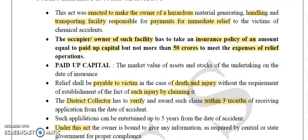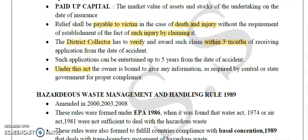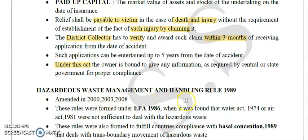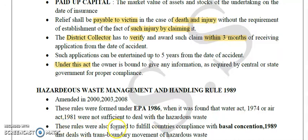Another important act is the Hazardous Waste Management and Handling Rules, which came in 1989. Its major amendments were in 2000, 2002, 2003, and 2016. These rules were made under the EPA 1986, when it was found that the Water Act 1974 and the Air Act were not sufficient to deal with hazardous waste. These rules were also formed to fulfill India's compliance with the Basel Convention of 1989, which deals with the transboundary movement of hazardous waste.